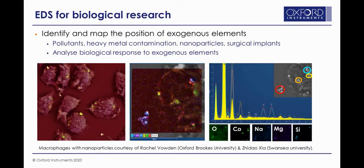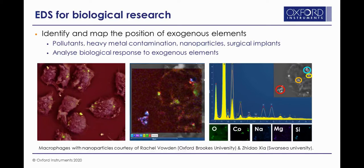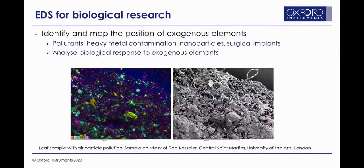It is also possible to identify and measure exogenous elements — things found in biological tissue but originating outside of it — including pollutants, heavy metal contamination, nanoparticles, and surgical implants. Here we have an example of macrophages exposed to cobalt nanoparticles, where EDS identifies the cobalt nanoparticles as distinct from other regions with an equally bright backscattered electron signal, which are actually composed of sodium and silicon. A second example shows particles from air pollution deposited onto the surface of a leaf, collected by collaborator Rob Kessler, demonstrating how EDS can easily identify the composition of pollutant particles on the leaf surface.